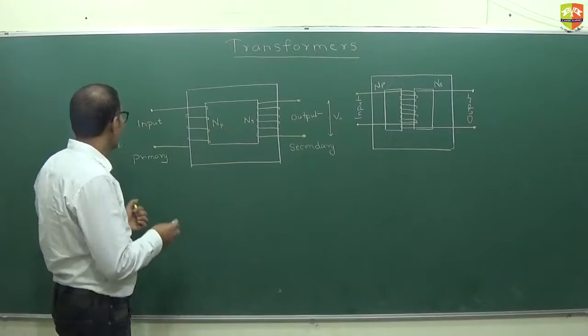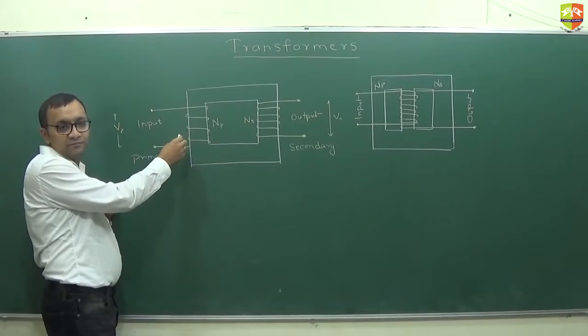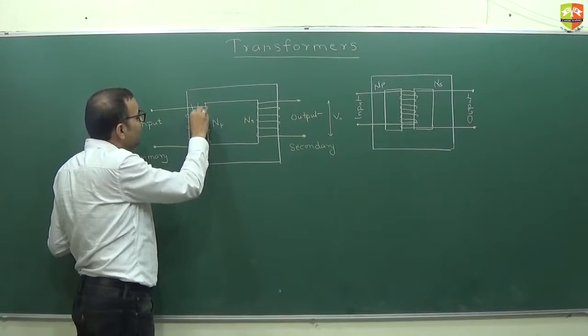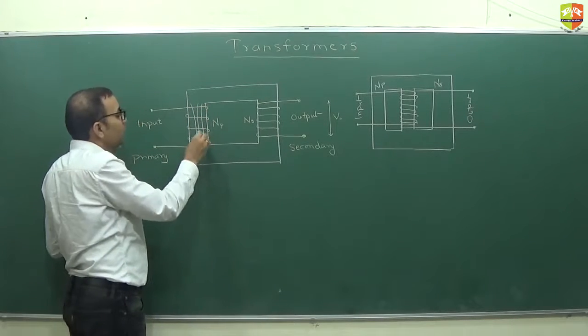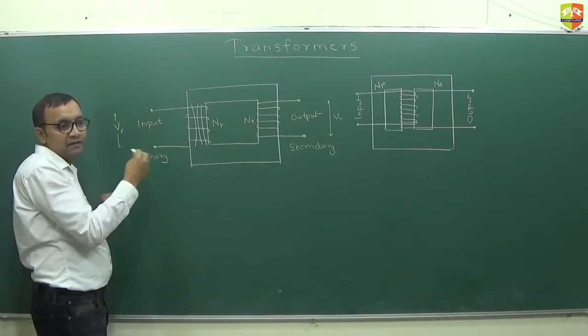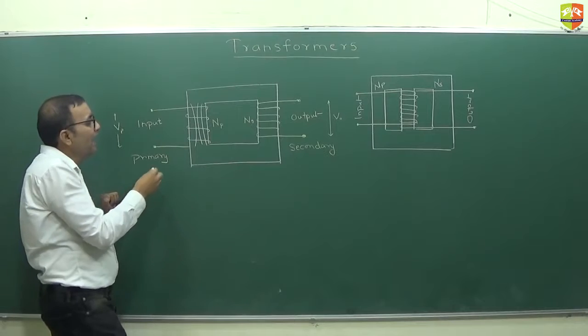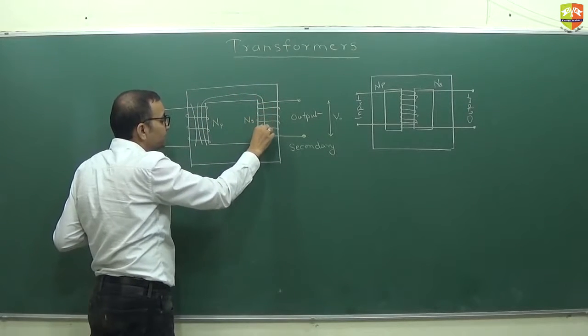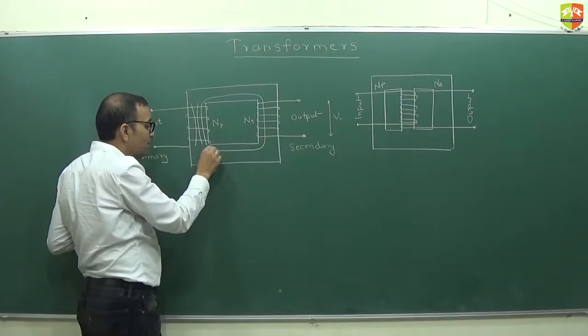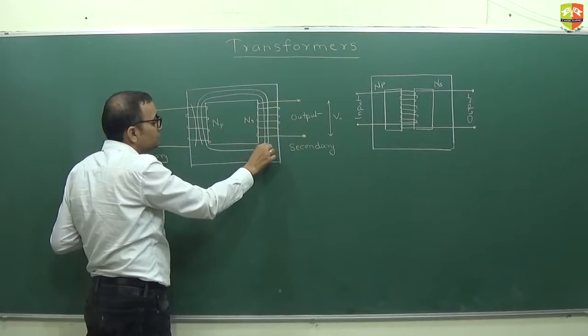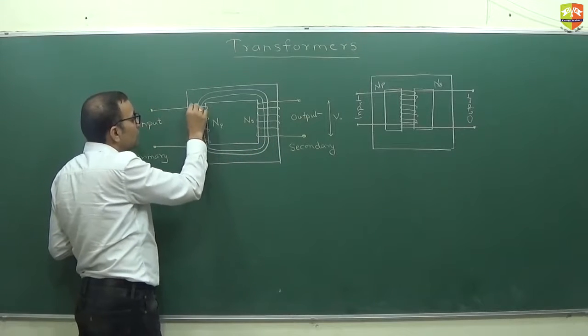What happens is the input voltage comes from this side. Because of the input voltage, there will be a flux that is generated over here. There will be current in the coil and current will generate magnetic field. And that is the flux. This flux will get transported to here, and that is how the magnetic field is forming the loop.